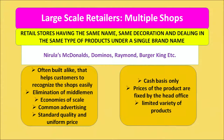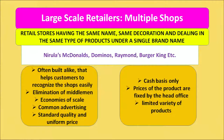Multiple shops are retail stores having the same name, same decoration, and dealing in the same type of products under a single brand name — for example, McDonald's, Domino's, Raymond, Burger King. These shops are built on similar guidelines to help consumers identify and recognize them easily. They provide cheaper products by eliminating middlemen from the chain of distribution and offer standard quality products at uniform prices. However, products are sold only on cash basis and prices are fixed by the head office, meaning individual shops have no control over pricing.